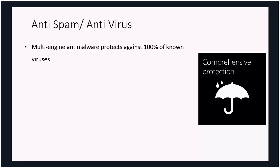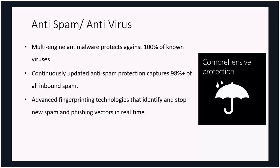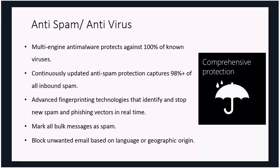Built into every Office 365 plan is anti-spam and antivirus capability. They support multi-engine anti-malware, anti-spam protection for inbound and outbound mail, and what's called advanced fingerprinting technology hosted under DLP — Data Loss Prevention. This allows you to upload a document, and any outgoing documents that match that template can be flagged, warning users not to send that type of information outside the business. You can also mark bulk messages as spam and block unwanted emails based on language or geographic region.